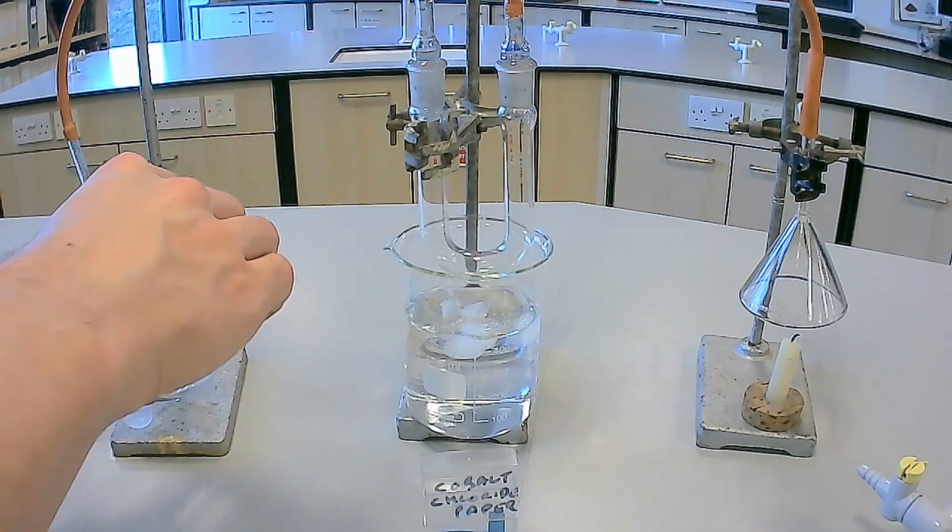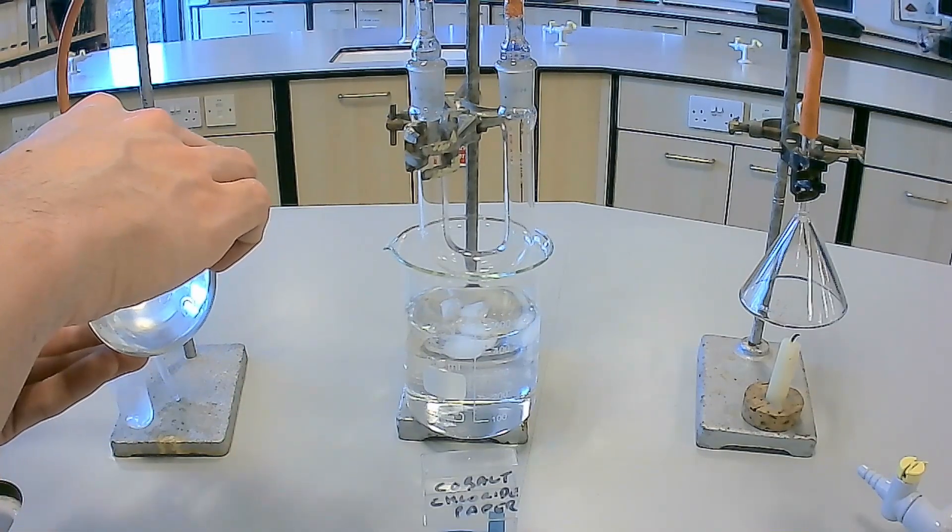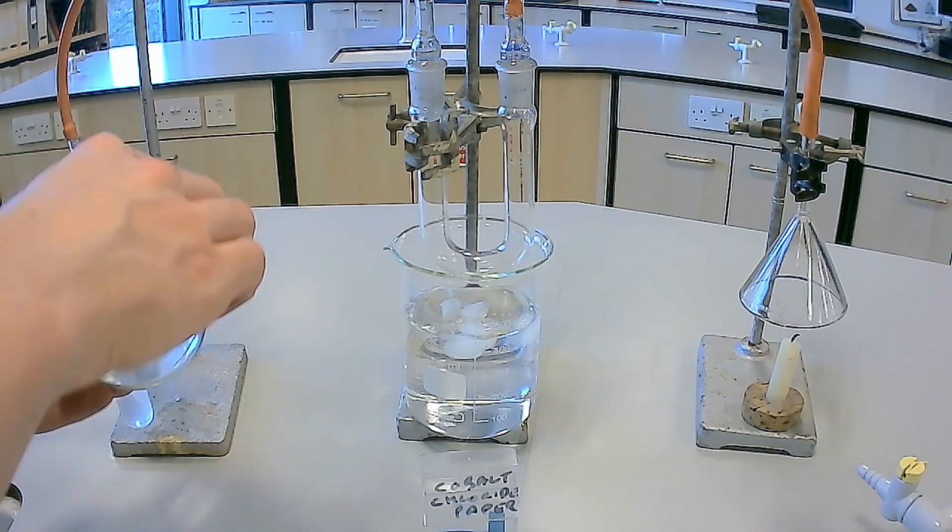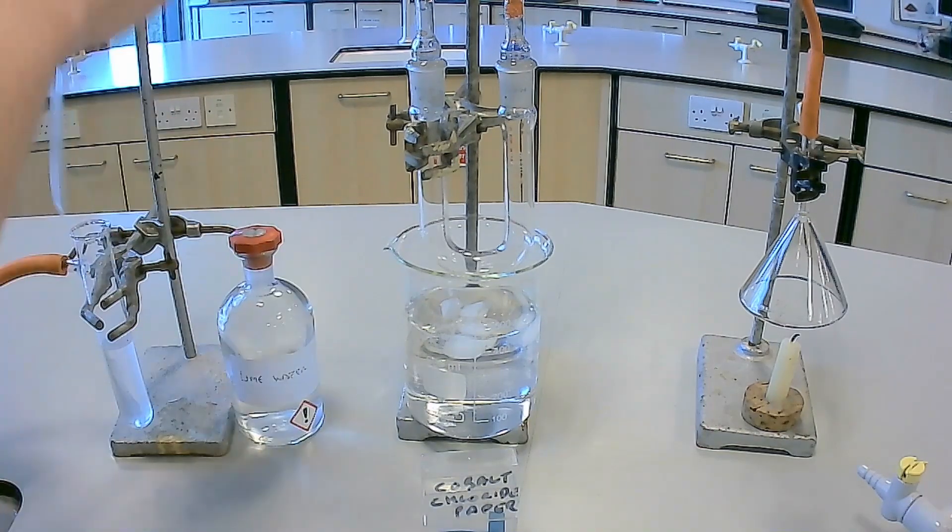First, lime water is added to the tube on the left hand side. Lime water is a calcium hydroxide solution which is used as a test for carbon dioxide gas.